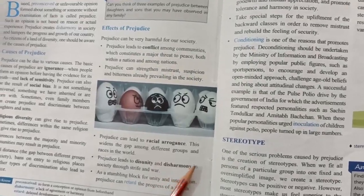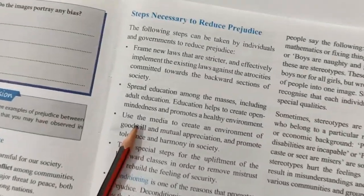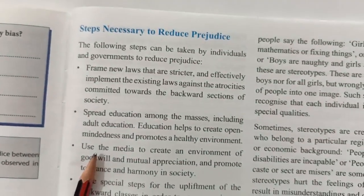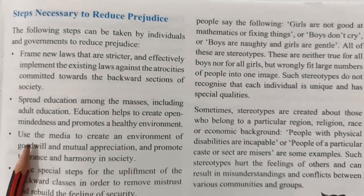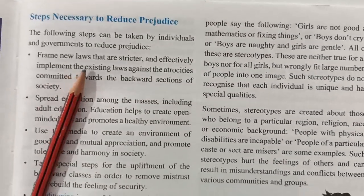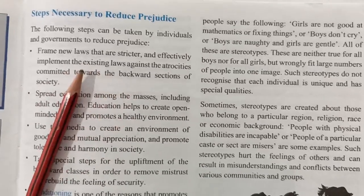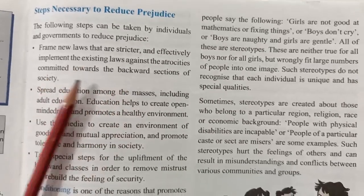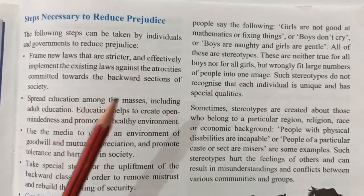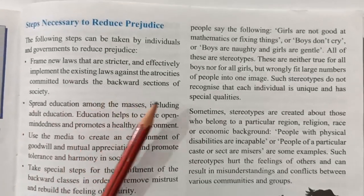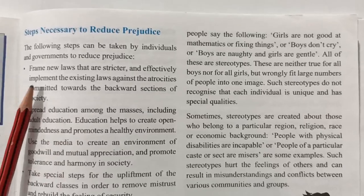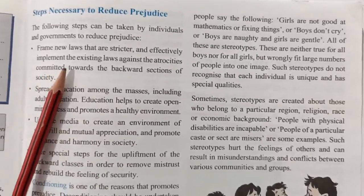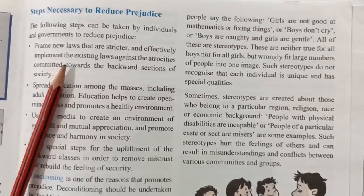Now we understand how we can reduce prejudice. There are steps necessary to reduce prejudice — how can an individual or government help reduce it? What can the government do? It can create new laws which are very strict. Effectively, they can implement existing laws against the atrocities committed toward the backward sections of society. If they make the laws stricter and implement the existing laws properly, that will help reduce prejudice.